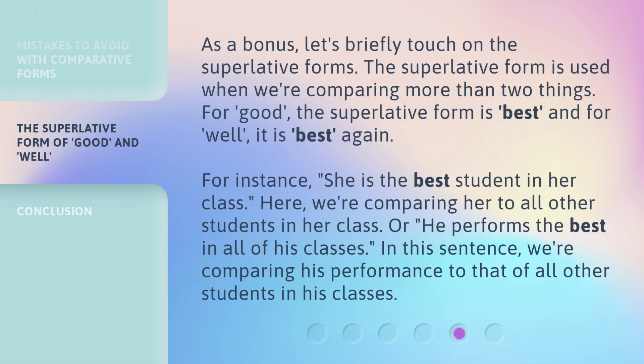As a bonus, let's briefly touch on the superlative forms. The superlative form is used when we're comparing more than two things. For good, the superlative form is best, and for well, it is also best. For instance, 'she is the best student in her class,' comparing her to all other students. Or, 'he performs the best in all of his classes,' comparing his performance to that of all other students.